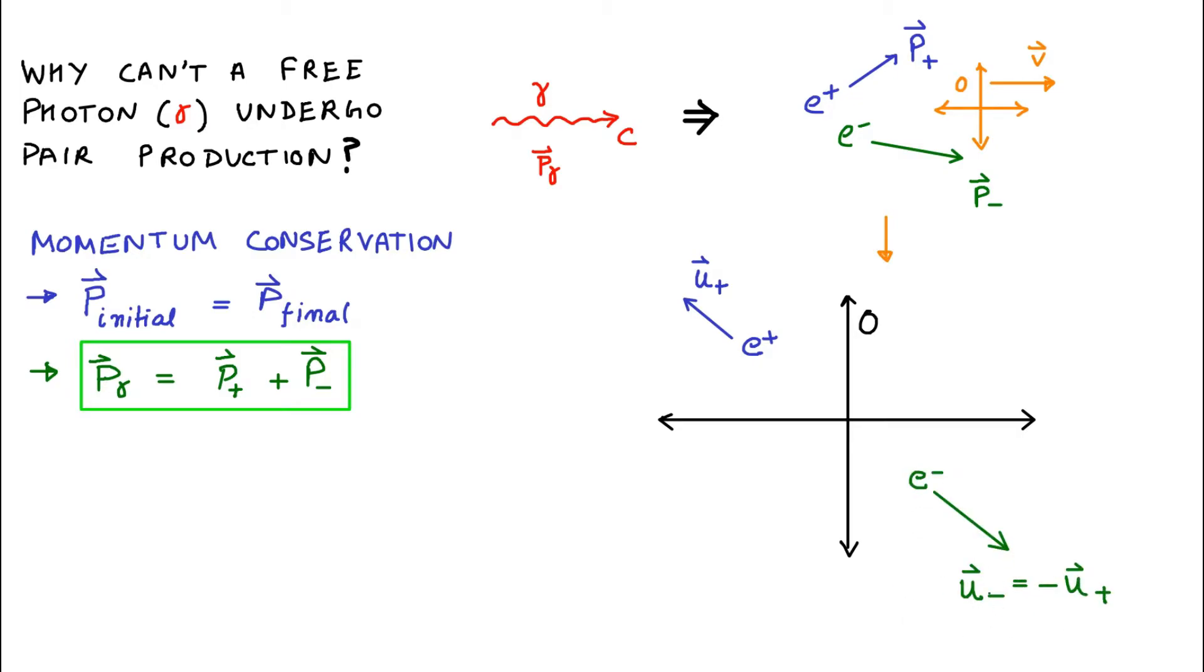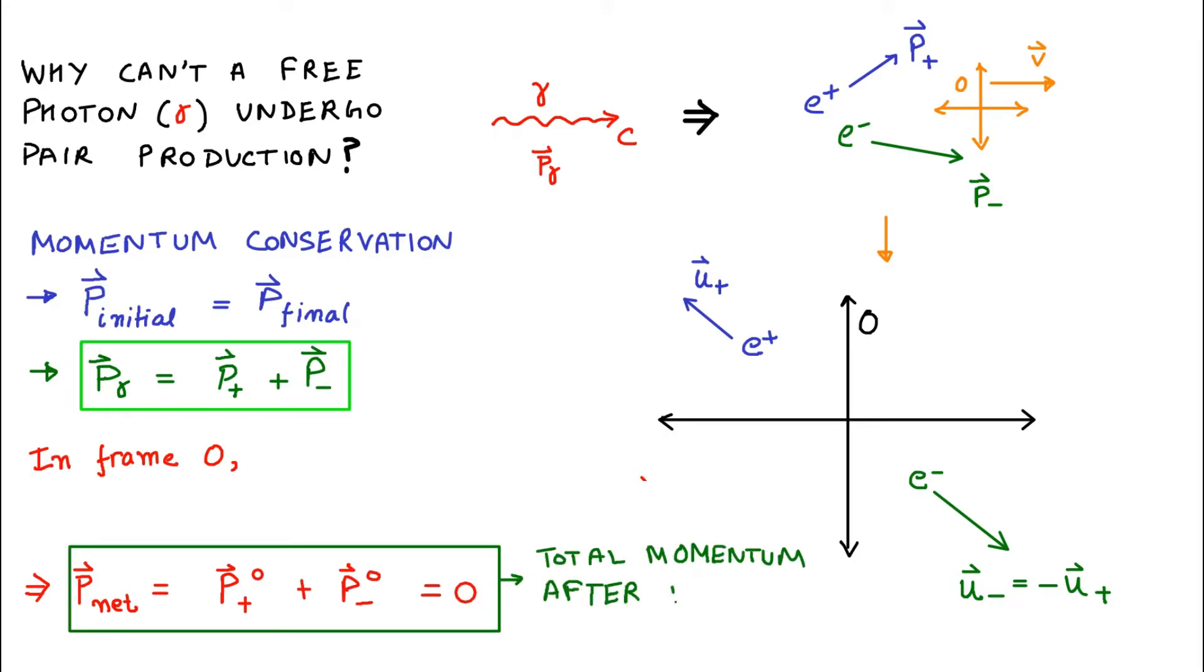Since electrons and positrons have same rest masses, their relativistic momentum will be equal in magnitude, and opposite in direction. Therefore the net momentum of this system is zero in this frame.